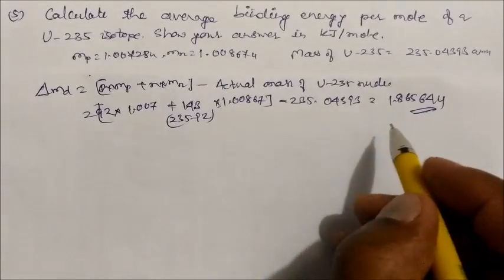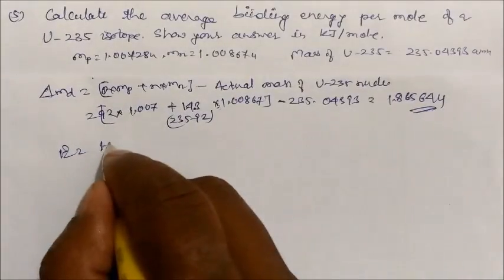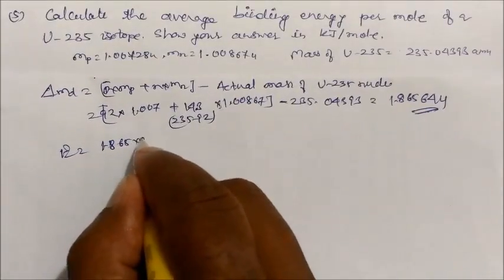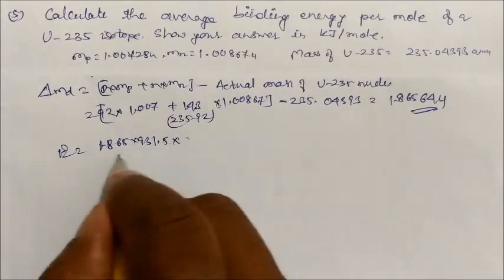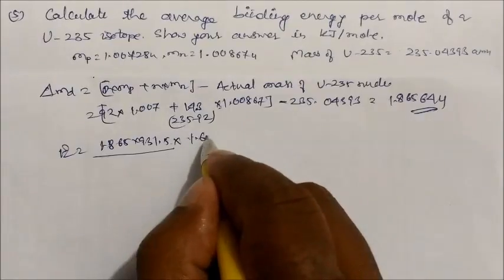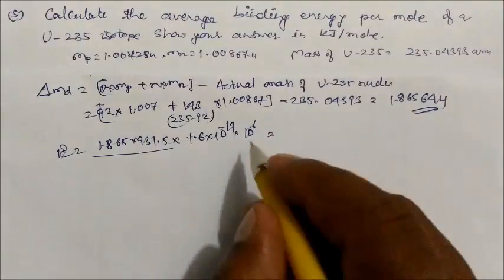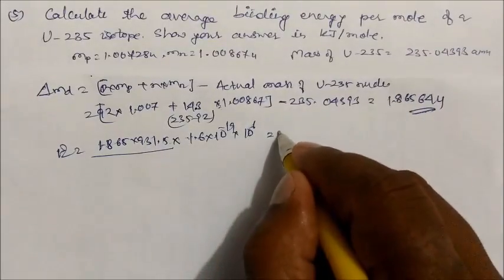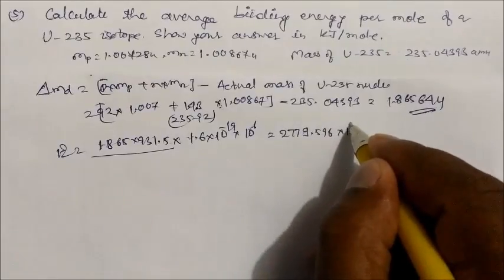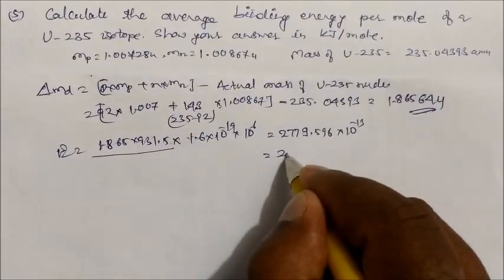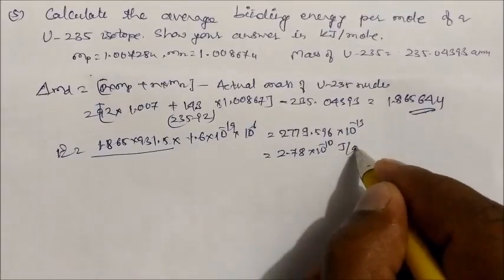Now calculate the energy. Total binding energy = 1.865 u × 931.5 MeV/u. To convert to joules, multiply by 10⁶ × 1.6 × 10⁻¹⁹ J/eV. This gives energy per atom = 2.78 × 10⁻¹⁰ joules per atom.